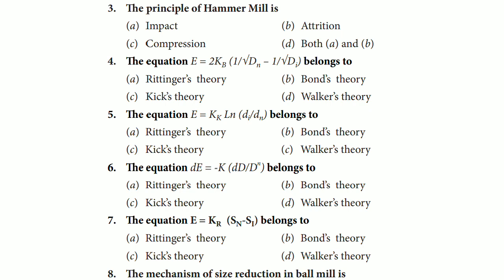The equation E = 2K_B(1/√D_n - 1/√D_i) belongs to Rittinger's theory, Bond's theory, Kick's theory, or Walker's theory. It is the Bond's theory. Correct answer is B, that is Bond's theory.